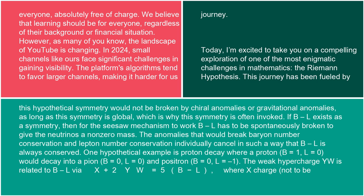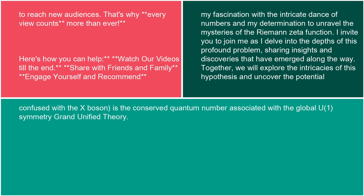The weak hypercharge YW is related to B-L via X + 2YW = 5(B minus L), where X charge — not to be confused with the X boson — is the conserved quantum number associated with the global U(1) symmetry of grand unified theory.